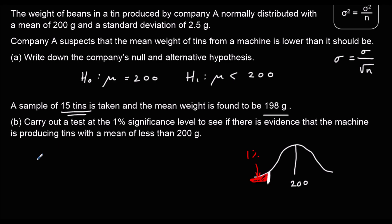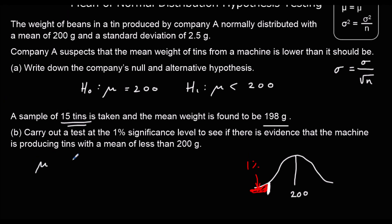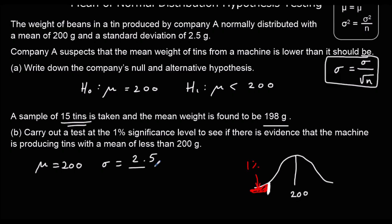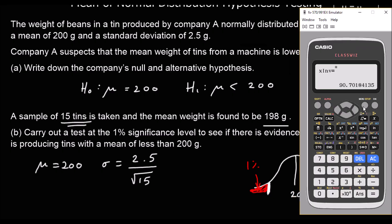We're going to have a mean of 200 — that hasn't changed — and our standard deviation is 2.5 over square root n, which is 15. We're going to work out the area of 1%.